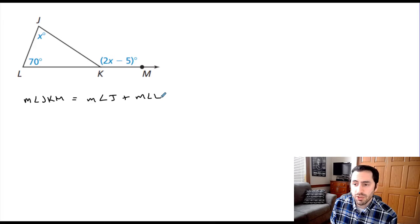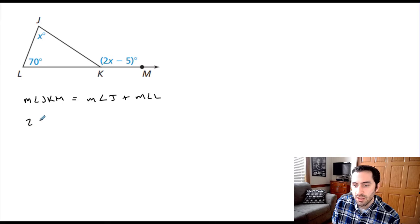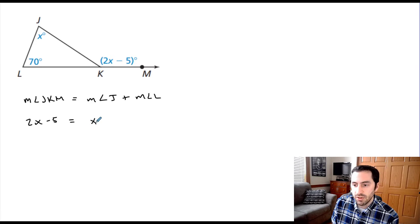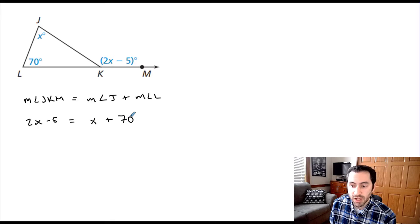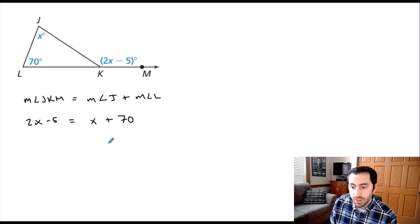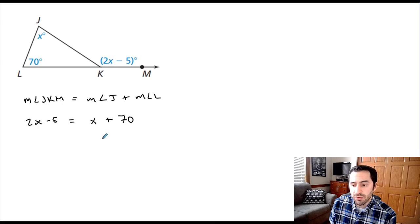Substituting in what we're given: we have the expression 2x minus 5 for our exterior angle, and then our two non-adjacent angles are x for the measure of angle J, and 70 for the measure of angle L. So the theorem allows us to set up this equation — 2x minus 5 equals x plus 70 — and we know this is true, so now we can solve for x.